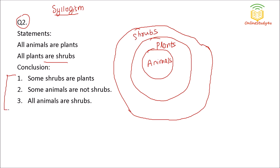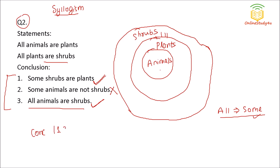Conclusion one: some shrubs are plants — yes, this is correct. If all plants are shrubs, then some shrubs are plants. Remember: all A are B means you can say some A are B. Conclusion two: some animals are not shrubs — this is wrong, because all animals are shrubs is clearly derivable. So the answer is conclusion one and three are true.